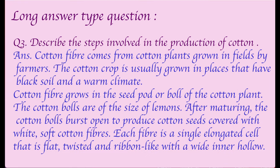Question three: Describe the steps involved in production of cotton. Cotton fiber comes from the cotton plant grown in fields. The cotton crop is usually grown in places with black soil and a warm climate. Cotton fiber grows in the seed pod or boll of the cotton plant. The cotton bolls are the size of lemons; after maturing they burst open to produce cotton seeds covered with white cotton fiber.